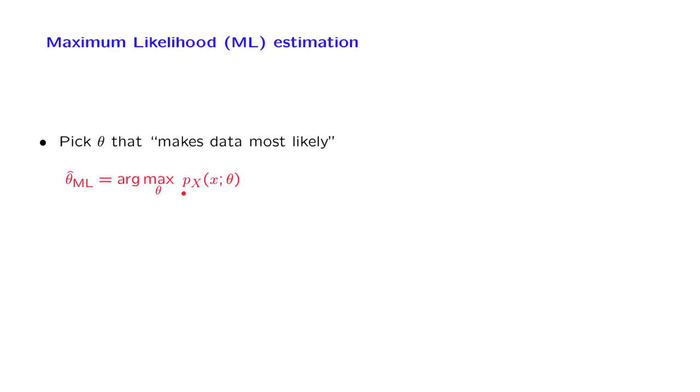Here I wrote a PMF. That's what you would do if x was a discrete random variable. But the same procedure applies when x is a continuous random variable. And more generally, this procedure also applies when x is a vector of observations and when theta is a vector of parameters.